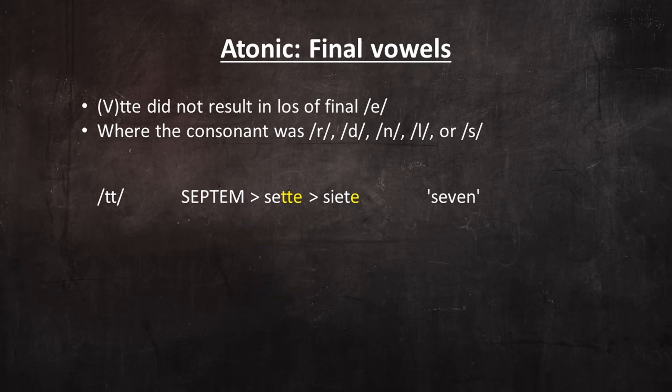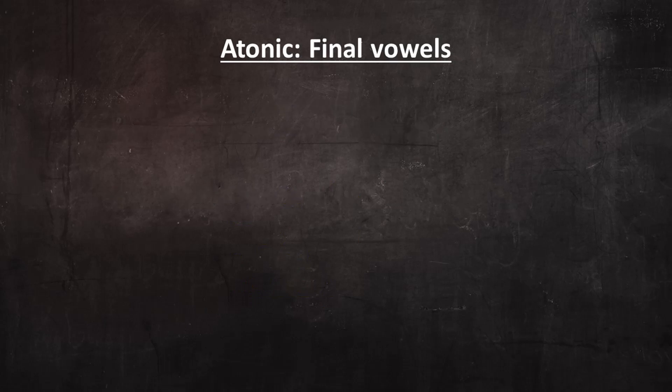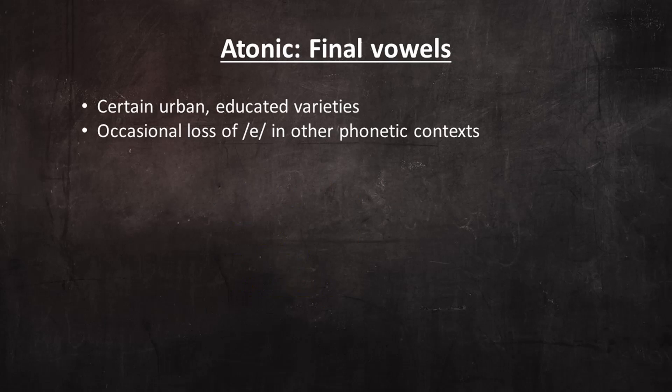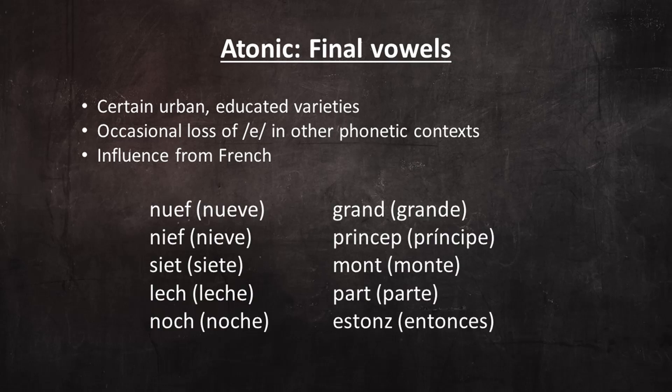The sequence vowel-TTE did not result in the loss of final E. Here's an example of that. Over the next couple of centuries, certain urban, educated varieties of Castilian underwent occasional loss of E in other phonetic contexts. Some authors believe that this was due to influence from French. During this period, E was lost after almost any consonant or consonant group. The forms with E never disappeared from Castilian writing, and they persisted in the speech of most people. So toward the end of the 13th century, they re-emerged in the speech of wealthy urbanites, and have remained in all levels of Spanish to the present day.